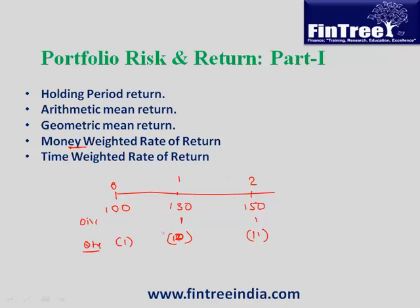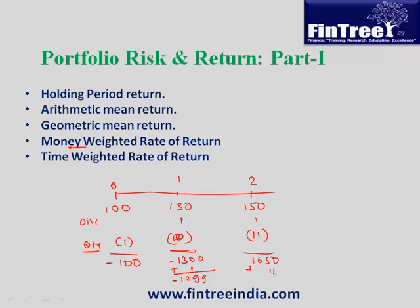He sold all 11 stocks at the end of year 2. To calculate money weighted rate of return, we calculate the IRR on the portfolio cash flows. Cash flow at time 0 is minus 100. At time 1: minus 1300 plus 1 dividend received, so net cash flow is minus 1299. At time 2: he sells all 11 stocks at 150, giving 1650, plus dividends on 11 stocks of 11, totaling 1661.